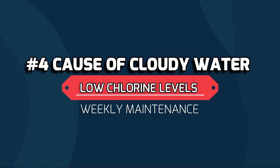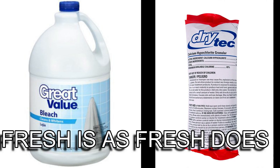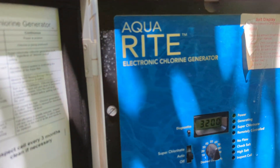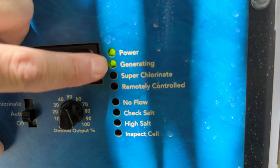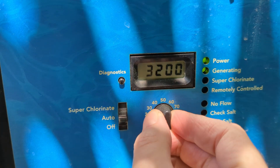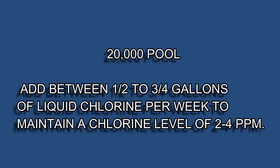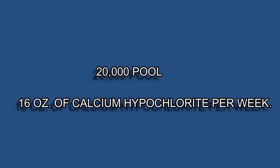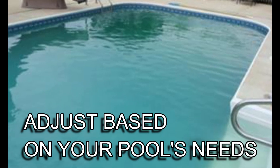Number four is low chlorine or low sanitizer levels. Make sure you're using fresh chlorine and keep it out of direct sunlight. Low salt levels in pools can also cause this — if the salinity in your pool is not at the right level, the chlorine cell won't produce any chlorine, which would cause your pool to go cloudy. A good baseline for liquid chlorine for a 20,000 gallon pool would be to add one-half to three-quarter gallons per week to maintain 2 to 4 parts per million, or 16 ounces of calcium hypochlorite per week. You can start there and make adjustments based on your pool's needs.